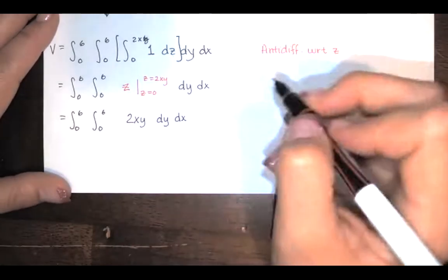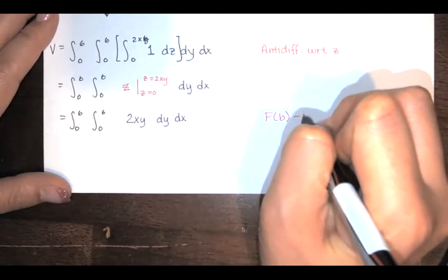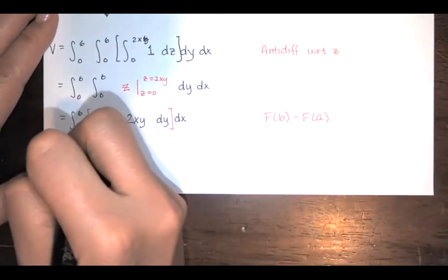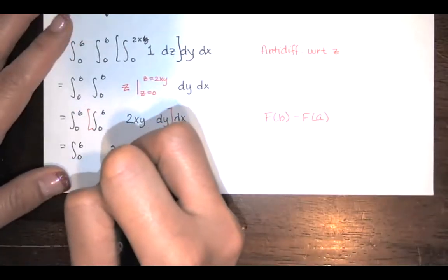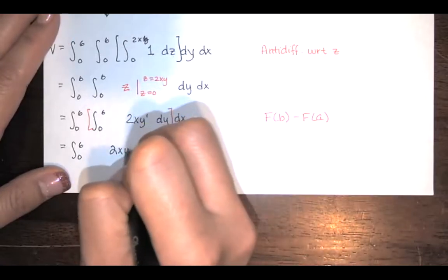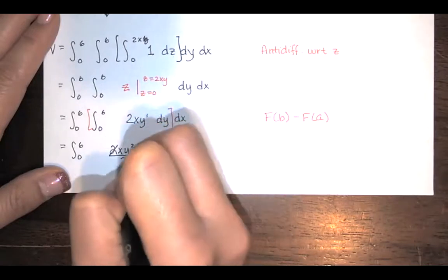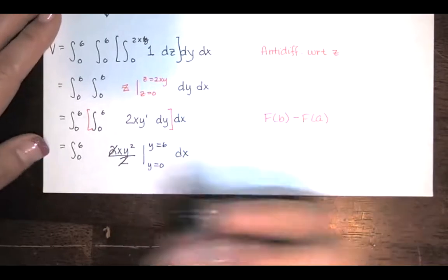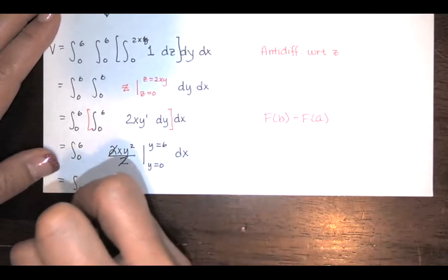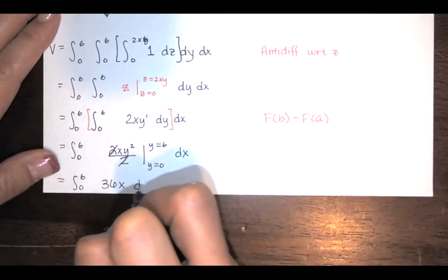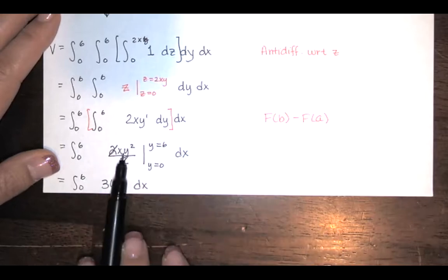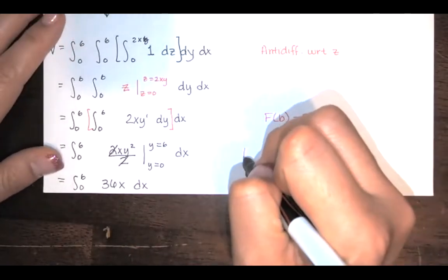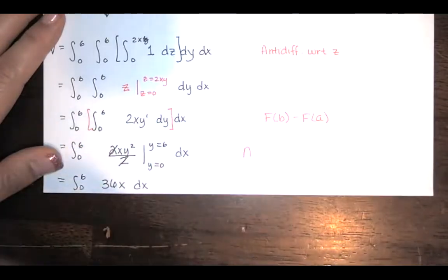Okay, so we anti-differentiated, we substituted in the upper bound and the lower bound and we subtracted. Now we're going to evaluate this integral with respect to y treating x as a constant. So bring the 2x down because it's constant and then we'll use the power rule for that y. Add 1 to the exponent, divide by the new exponent. The 2s reduce. Then you want to evaluate from y equals 0 to y equals 6. 6 squared is 36. So we have 36x minus 0, which is of course 36x.